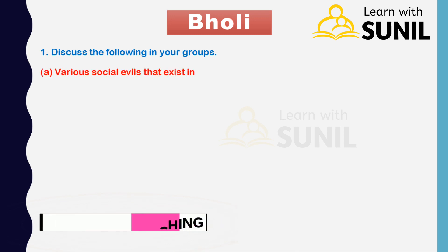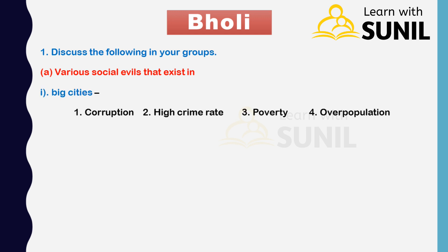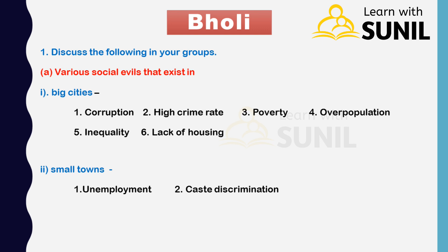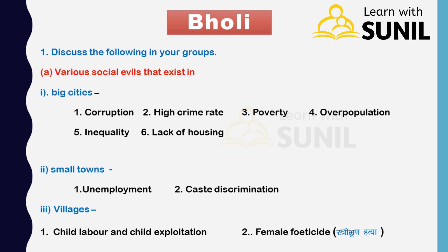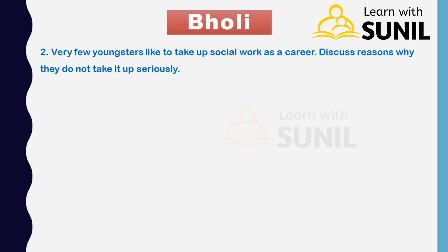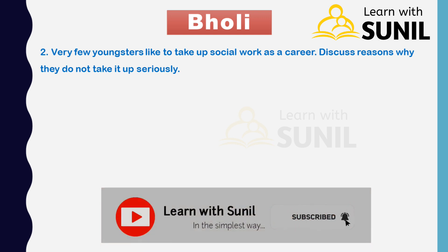First question: discuss the following in your groups. A) Various social evils that exist in big cities: first, corruption; second, high crime rate; third, poverty; fourth, overpopulation; fifth, inequality; sixth, lack of housing. In small towns: first, unemployment; second, caste discrimination. In villages: first, child labor and child exploitation; second, female foeticide.